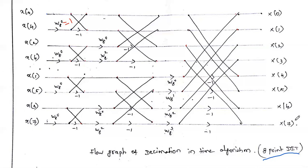This is how to draw the DIT FFT butterfly diagram. After drawing the diagram, apply the input, multiply properly with the twiddle factors, compute the output of stage one, feed it as input to stage two, compute stage two output, feed it to stage three, and compute the final output. That final output is X(k) — the DFT answer for the given sequence. The diagram must be drawn carefully and correctly, as any mistake in placing the −1 values or connections will make the entire answer wrong.